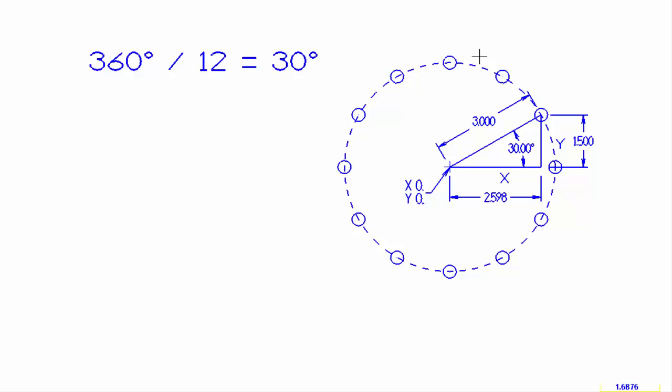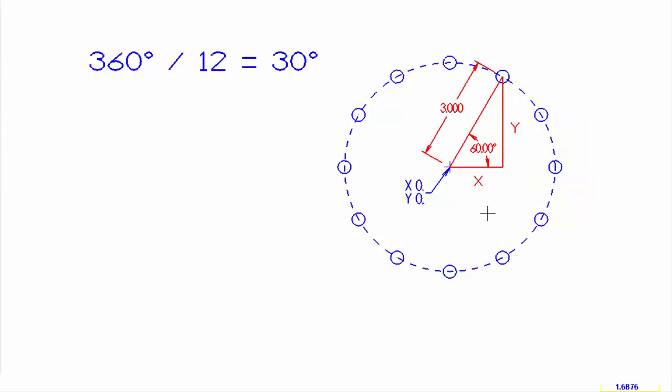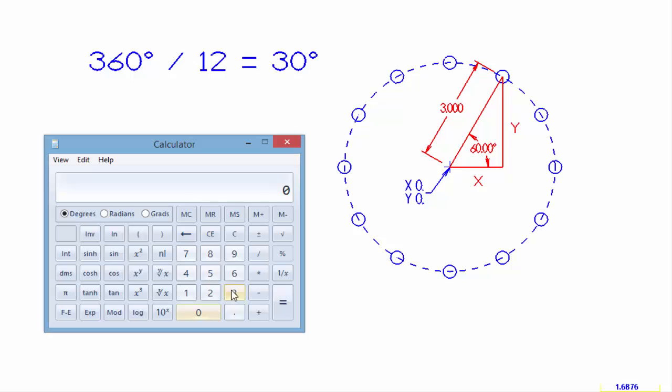We're going to do the same thing for the next hole. Again, we'll use a triangle to calculate the x and y dimensions. We have a 60 degree angle. Let's bring up the calculator. We take 60 degrees, do cosine times the 3 inch radius, equals inch and a half. So that is the x distance from center.